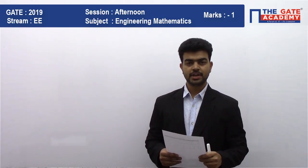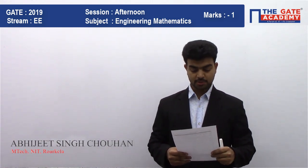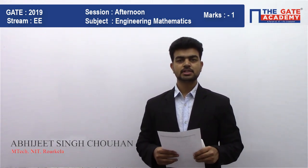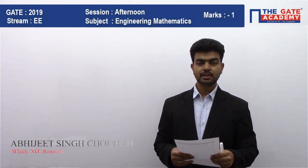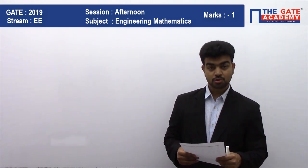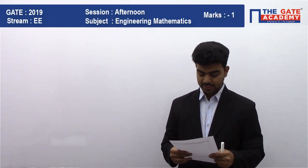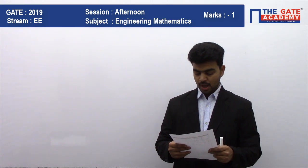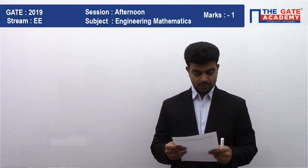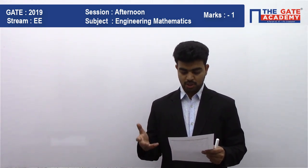Hello students, I'm Abhijit. Here we'll be solving a question of engineering mathematics from the chapter linear algebra. The question is: if the eigenvalues of matrix M are 4 and 9, then the eigenvalues of the matrix M squared will be?